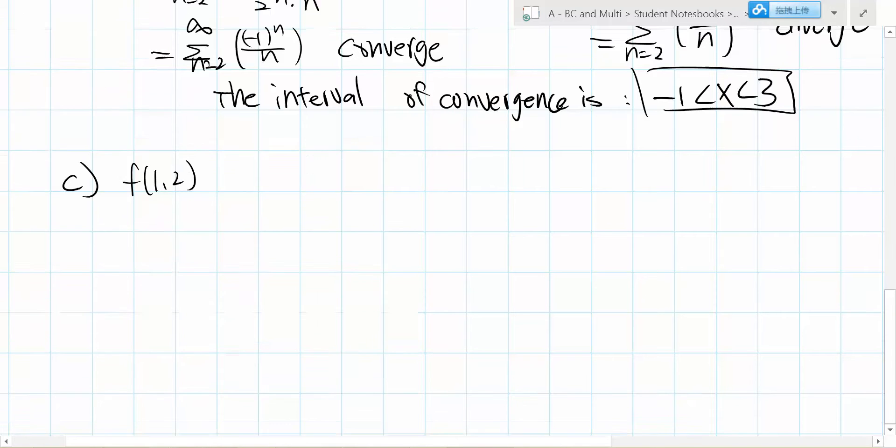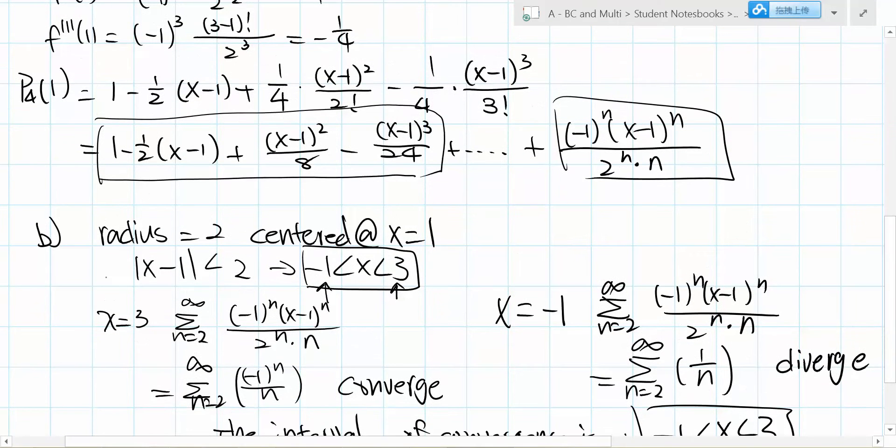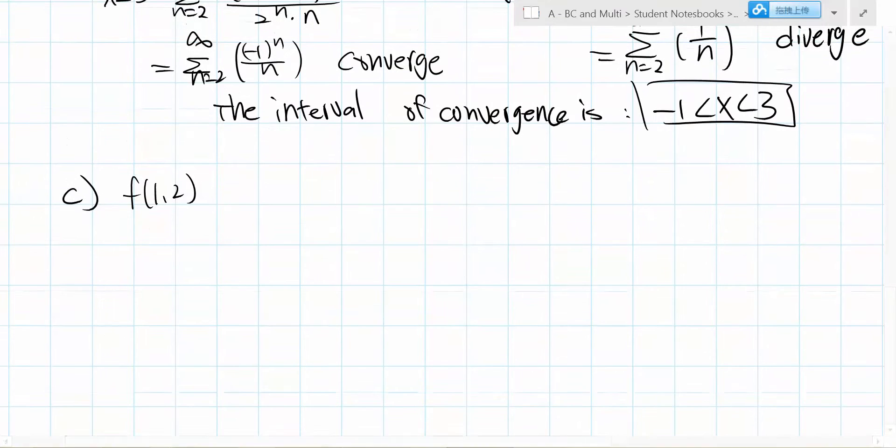For the first three non-zero terms, we just plug 1.2 into x in this formula. What I got is this expression, and when you calculate it, it equals 181/200.